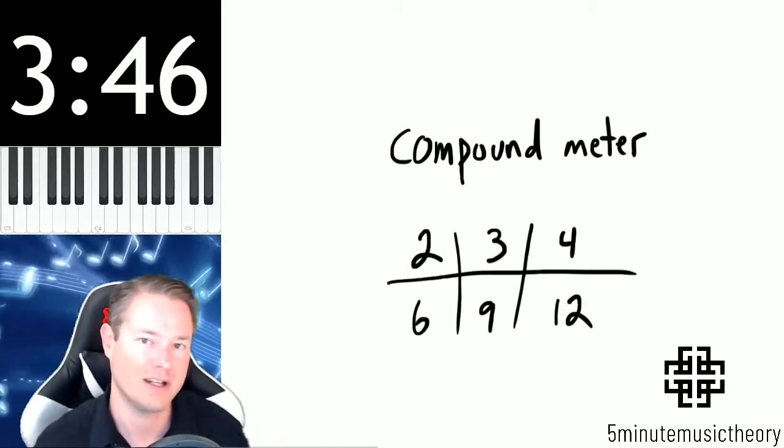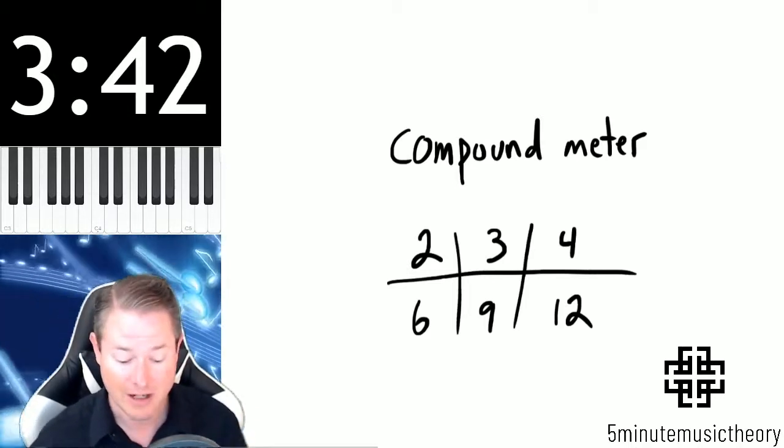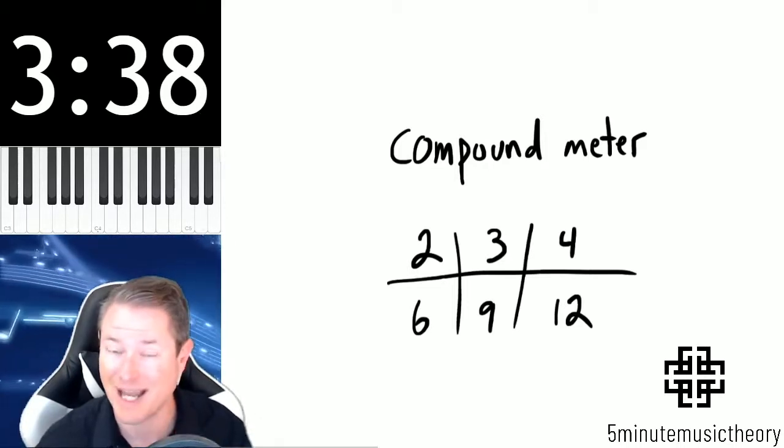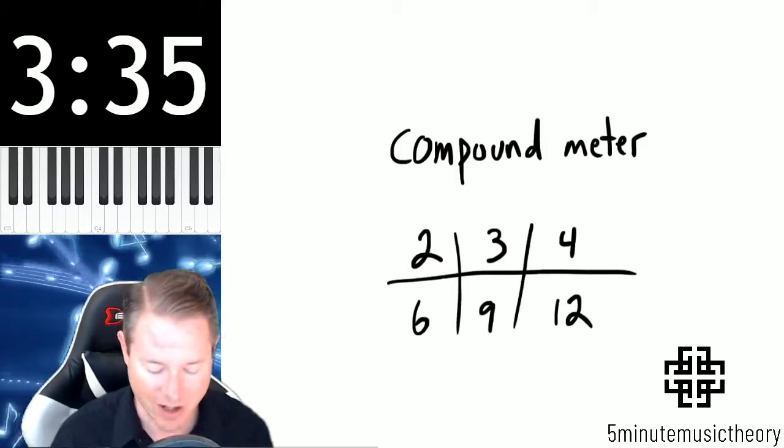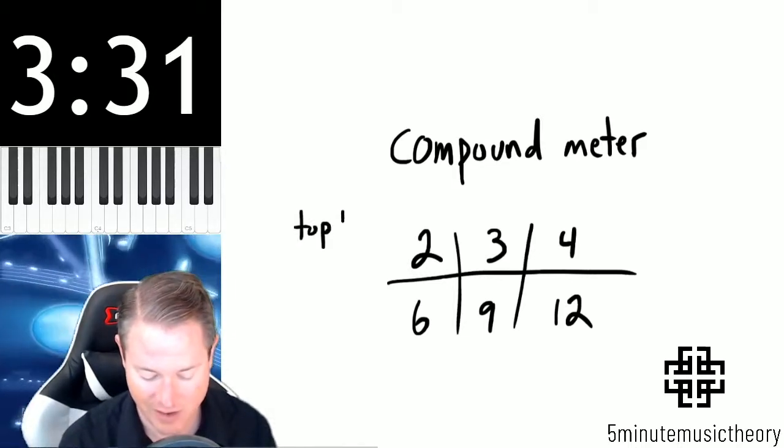For quite a long time here in these videos, these are the only numbers that we will see on the top of a time signature. Note the omissions of some, like there's no 5, there's no 7, there's no 8. These are the only numbers that we will see for a very long time on the top of a time signature. So again, this is the top number.